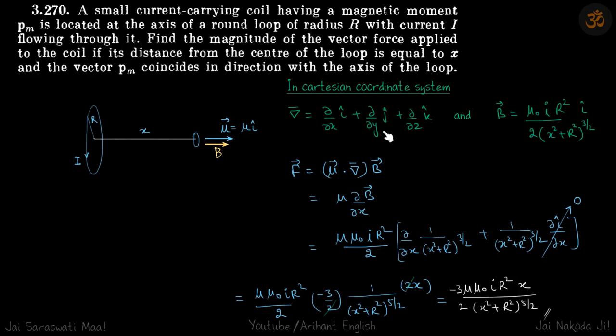Del operator in Cartesian coordinate system is this. Force is mu dot del on b vector. We are not going to derive this, we are going to directly use this.